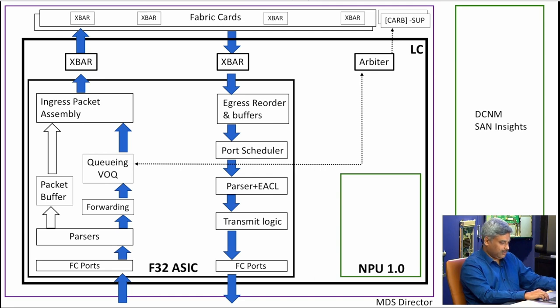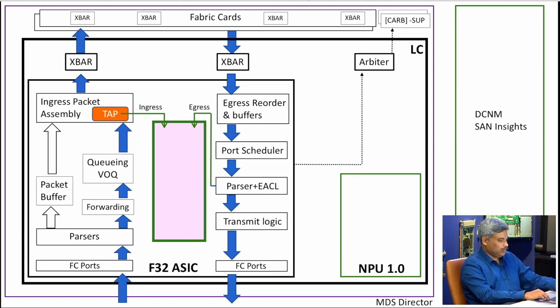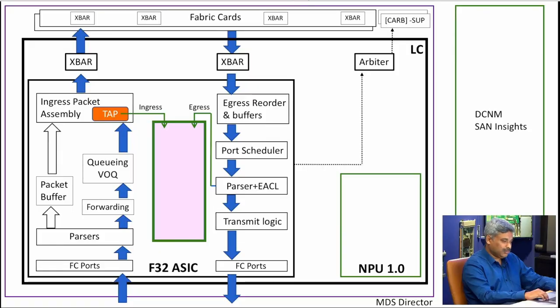The analytics tap happens at the packet path into the analytics engine. Unlike an optical tap which is outside a switch, Cisco innovated a way to tap the packet inside the ASIC itself as packets are going through, without disrupting the flow and without introducing any additional latency. A common question is whether the tap affects normal traffic flow — it does not at all. It is just a tap; your normal traffic flow is completely unaffected.